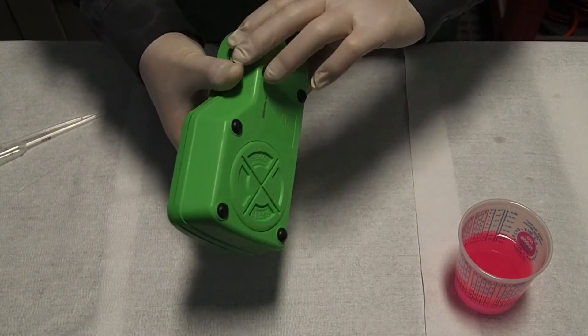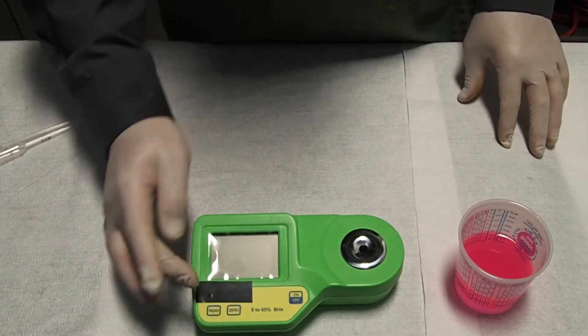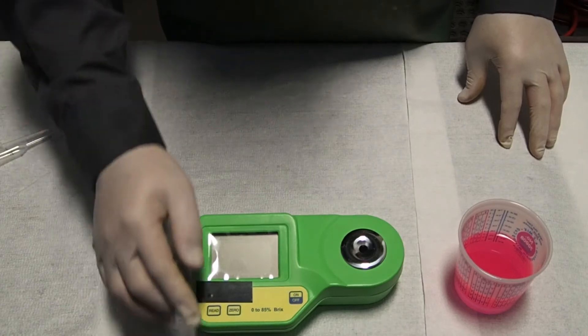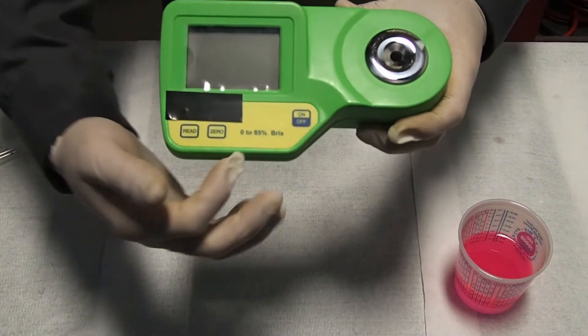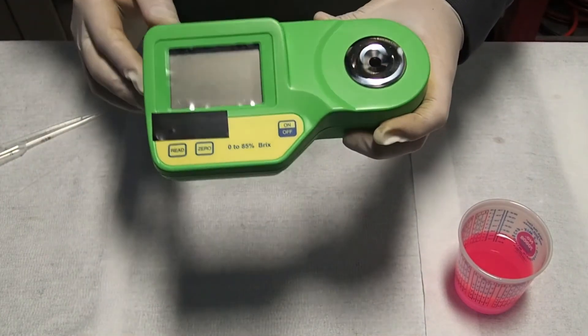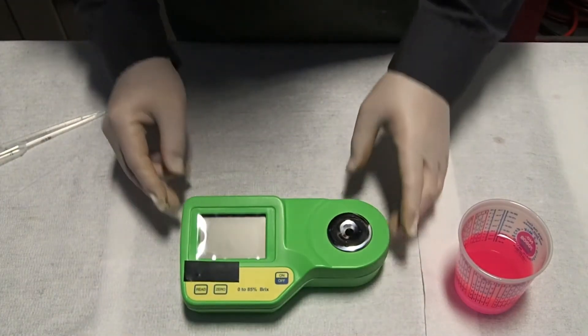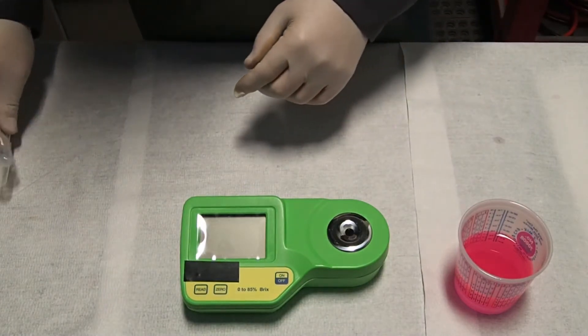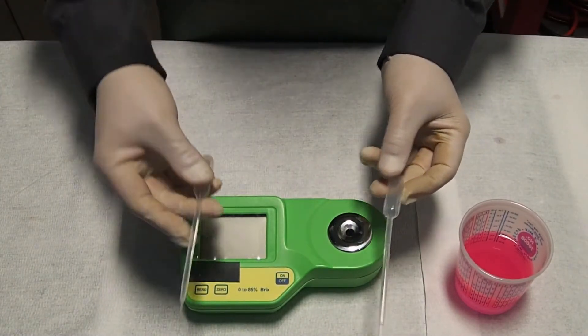It has an LCD screen, read and zero keys, and it can measure from 0 to 85 percent Brix. A window samples this very light, nice refractometer. We are going to use two pipettes.